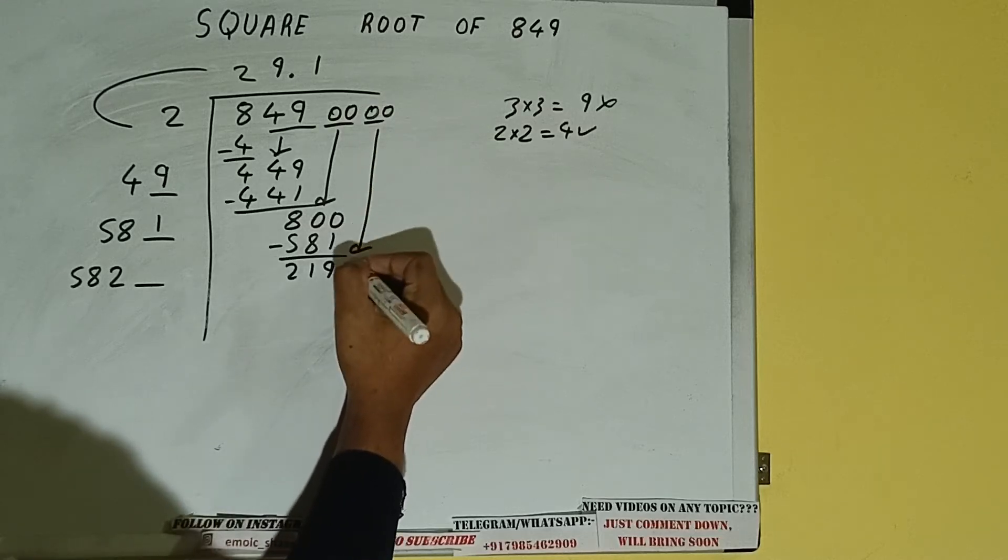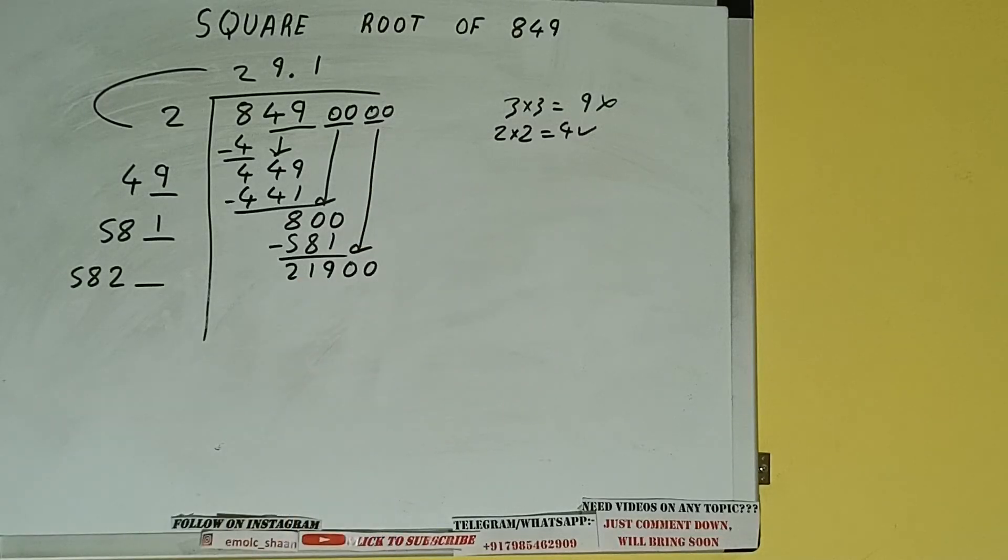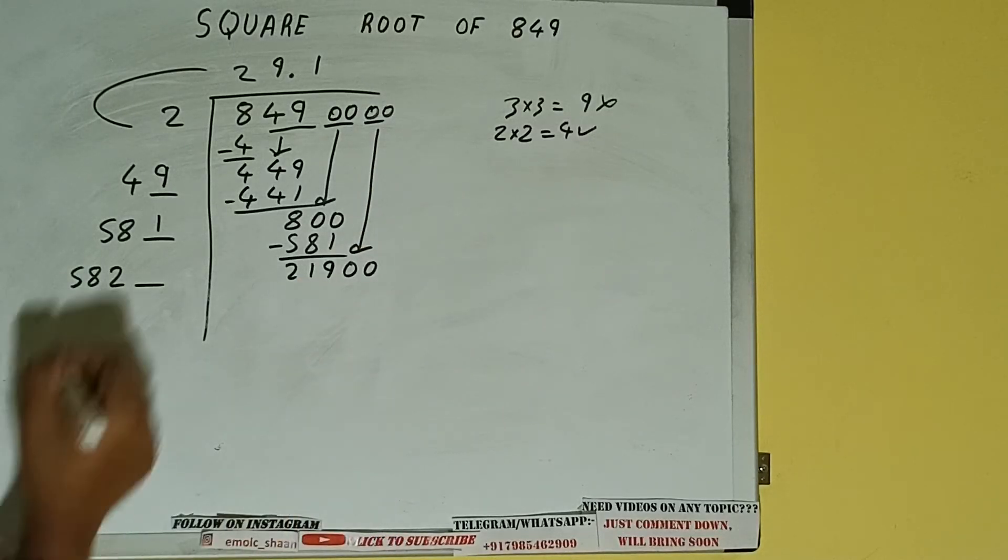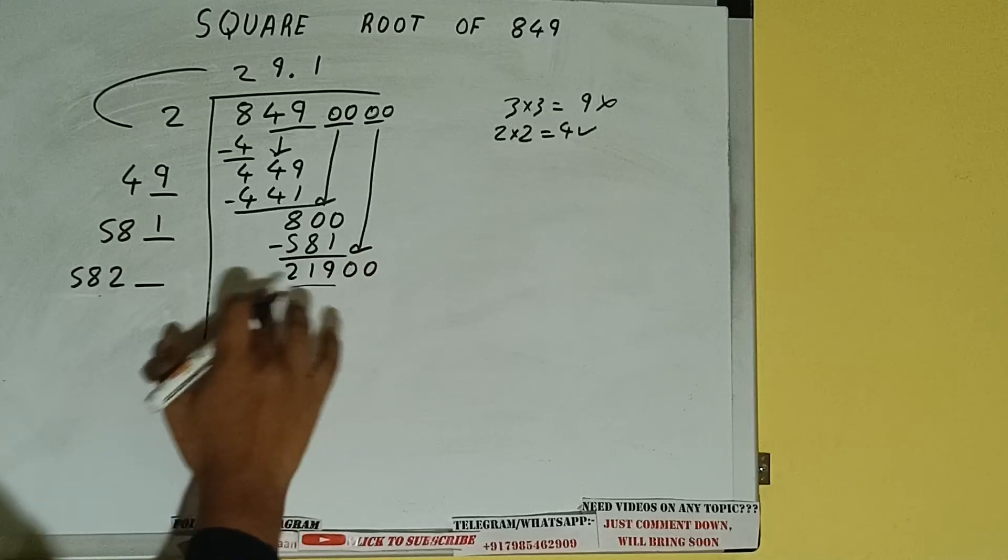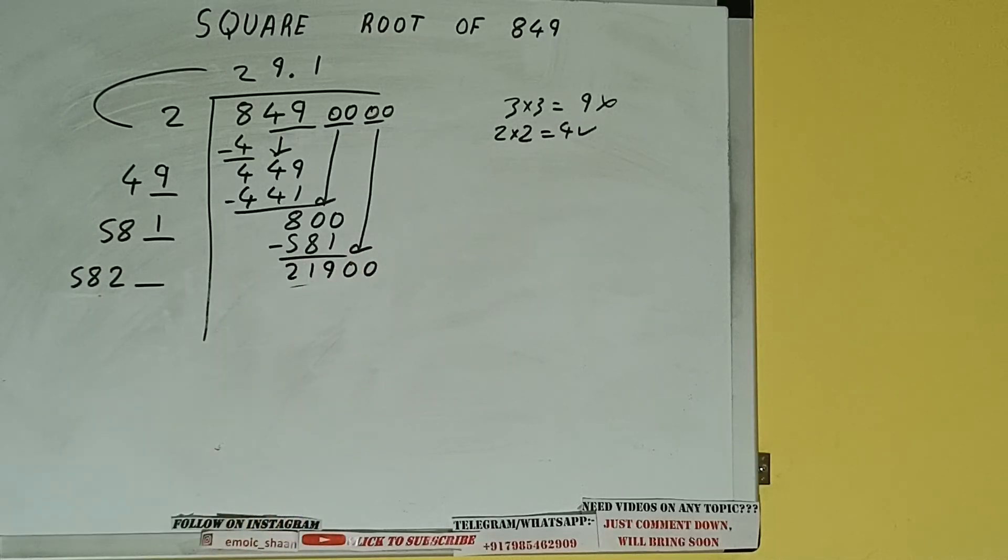Bring the next pair of zeros down and it will be 21900. Now compare this 58 with this 219. 58 four times is 232, so we cannot try 4 times. We have to try 3 times.